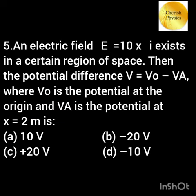An electric field 10x î vector exists in space. Then the potential difference V₀ minus Vₐ — what is the potential Vₐ at x equal to 2 meter?